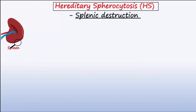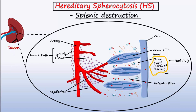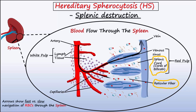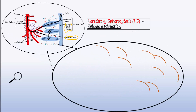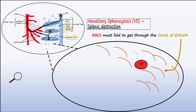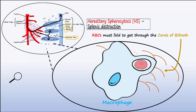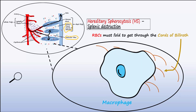Magnifying a section of the spleen, we find the splenic cords, or cords of Billroth, of the red pulp, which contain many small strands called reticular fibers. Most of the red blood cells flow through the spleen quickly, but a portion of the red blood cells must slowly navigate their way through these reticular fibers of the spleen's red pulp. The passageways to get through the reticular fibers are so small that folding of the red blood cell is required to pass through. Spherical red blood cells in those with hereditary spherocytosis lose this folding ability and get stuck in the cords of Billroth. Intermingled in the fibers are macrophages that phagocytose the red blood cells that are stuck in the cords. This splenic destruction of spherical RBCs greatly lessens their lifespan from 120 days down to 20 days.